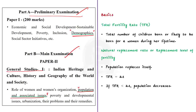First of all, what is Total Fertility Rate, shortly referred to as TFR? The rate refers to the total number of children born or likely to be born during a woman's lifetime. That is what Total Fertility Rate means.